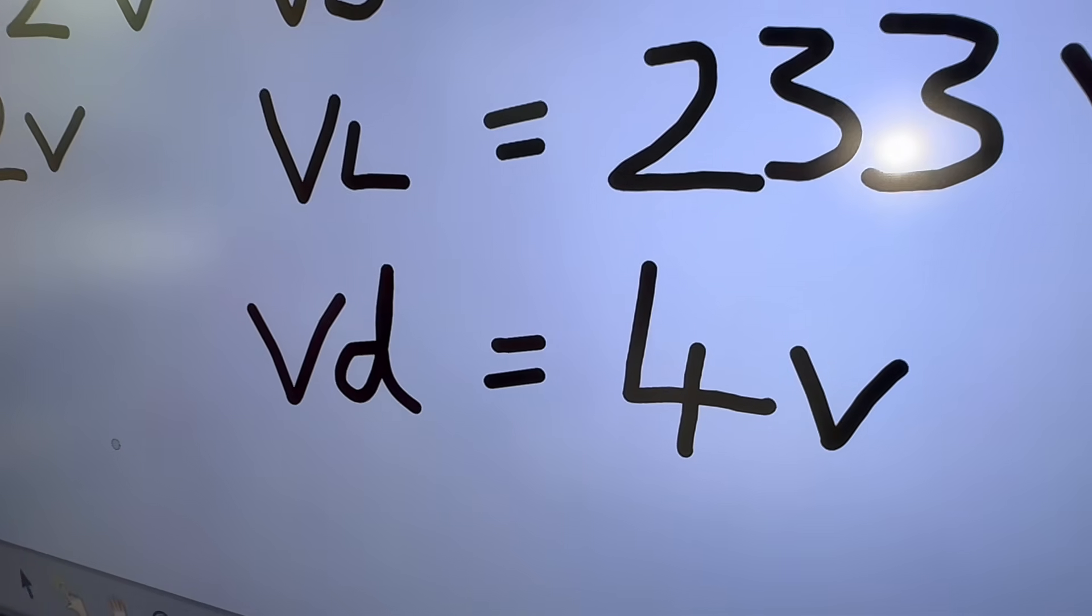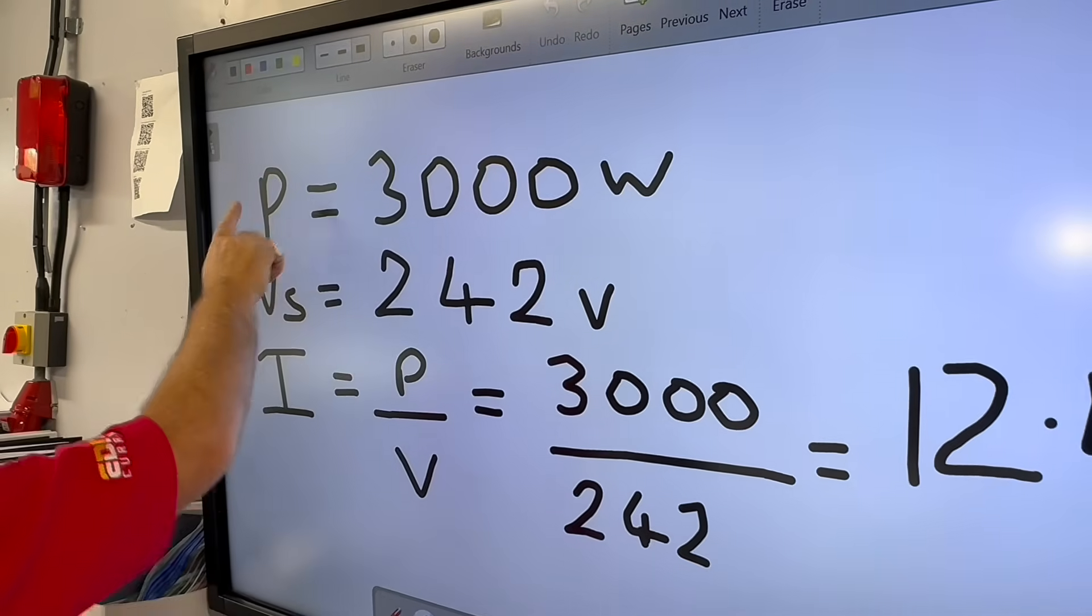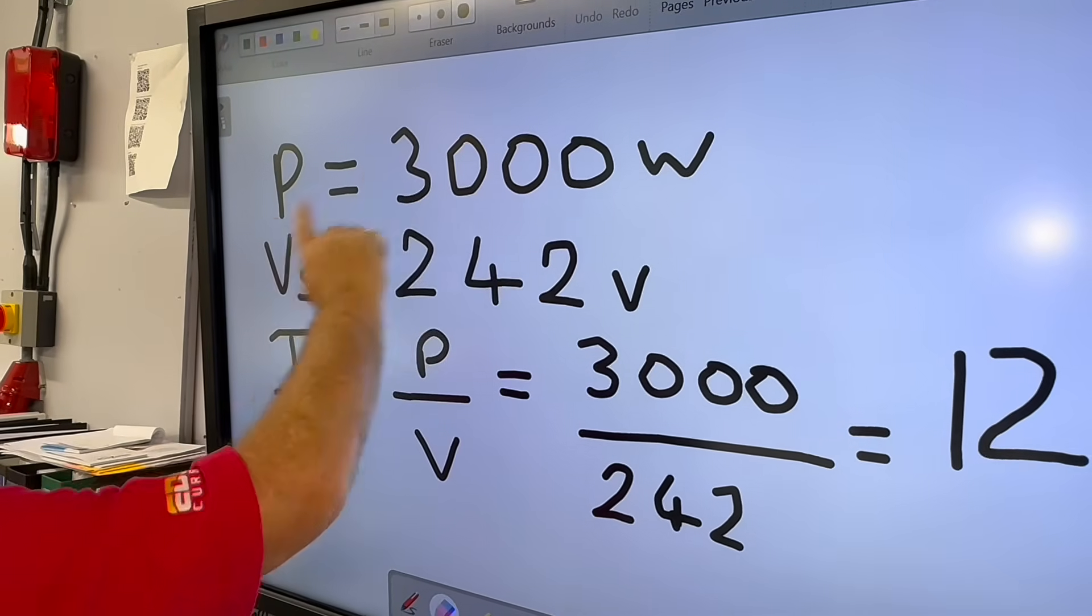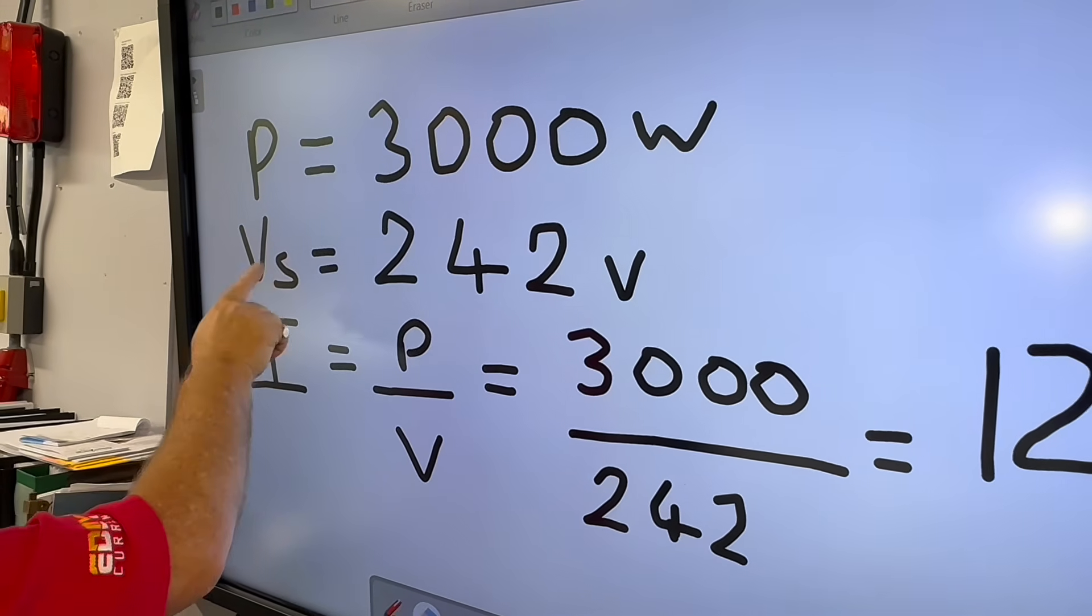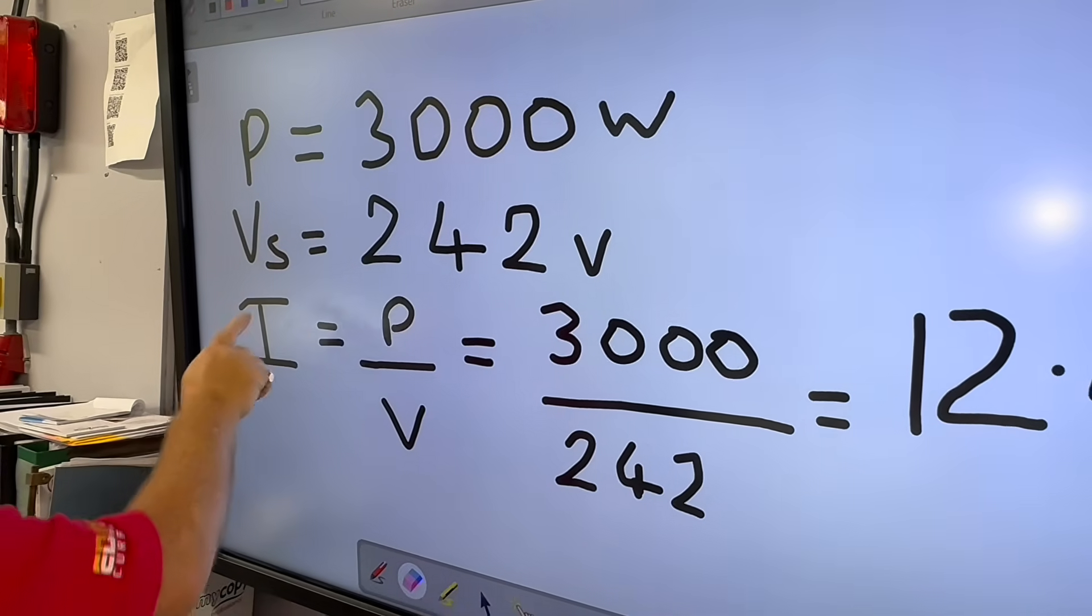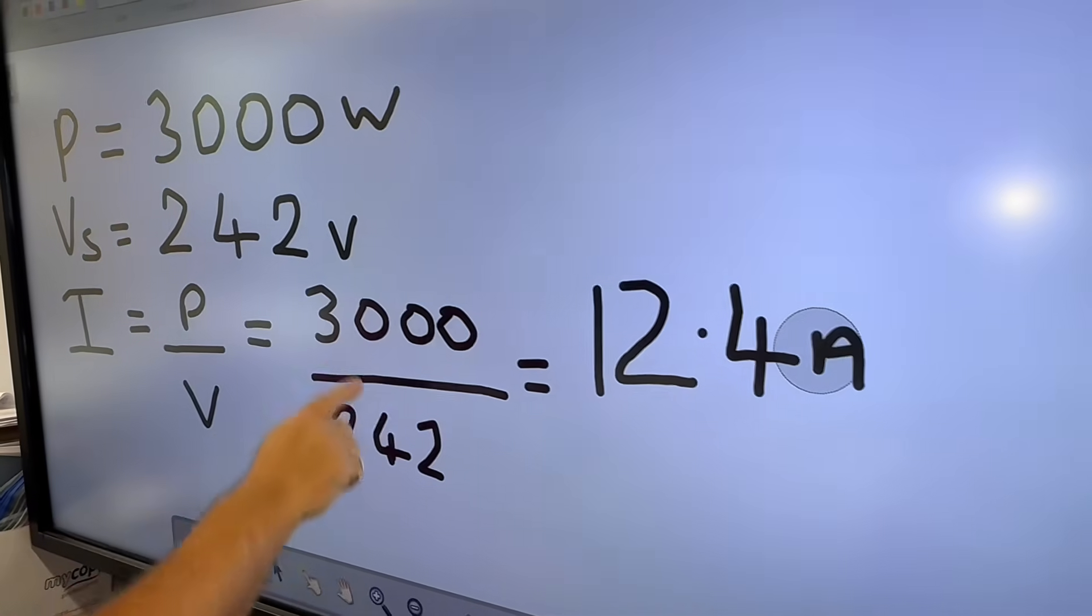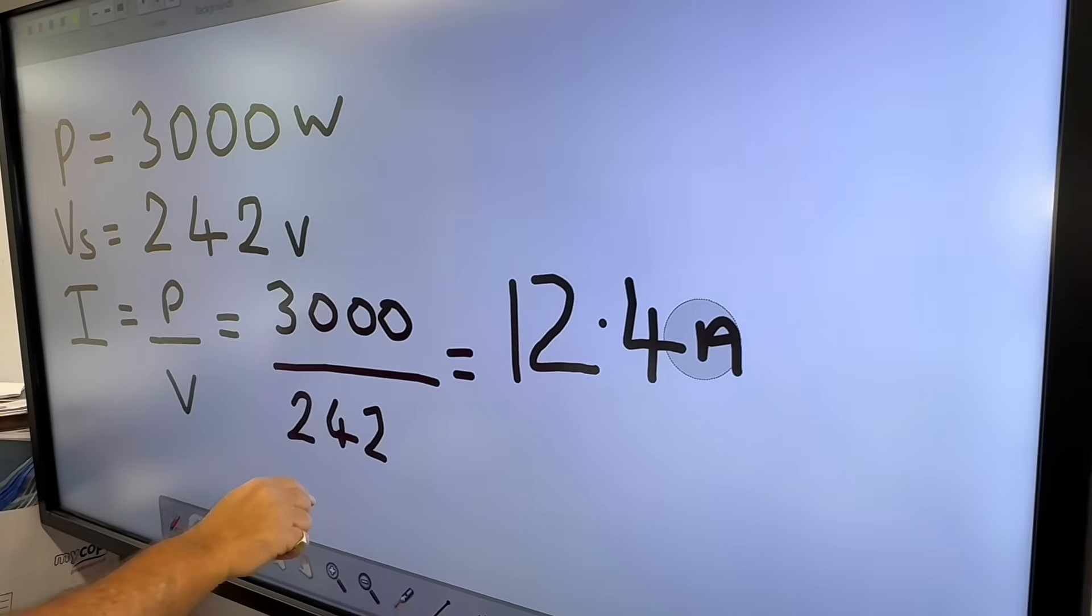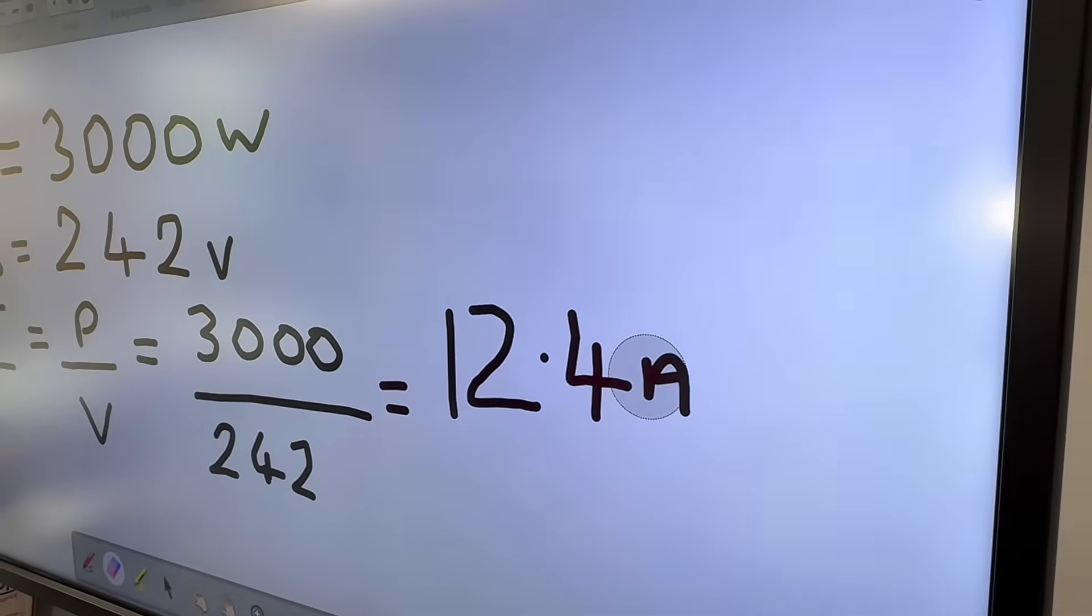That's what we're thinking about when people say volt drop. So now we're going on to power, and we said that the kettle was approximately 3,000 watts, and the supply voltage was 242 volts. So I equals P over V, so 3,000 divided by 242, gave us a circuit current of 12.4 amperes.